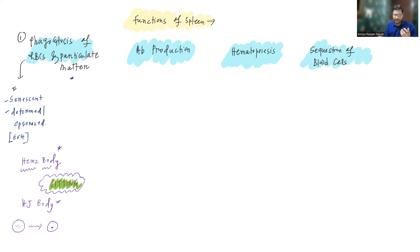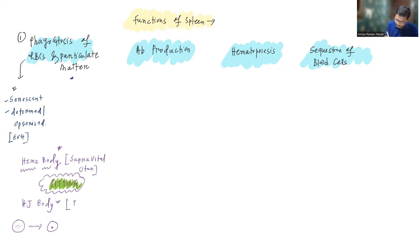Heinz bodies and Howell-Jolly bodies appear similar but differ in staining: Heinz bodies are found with supra-vital stain, while Howell-Jolly bodies can be identified on routine Giemsa stain.